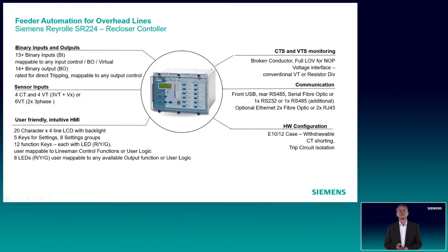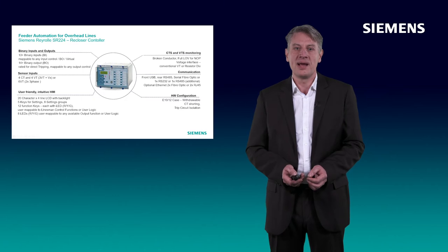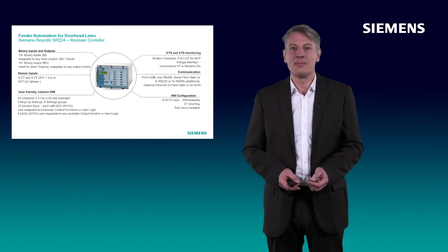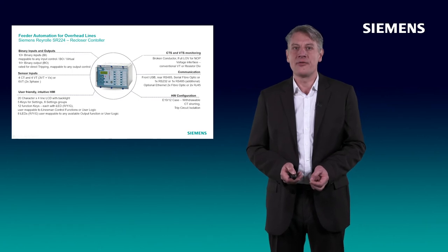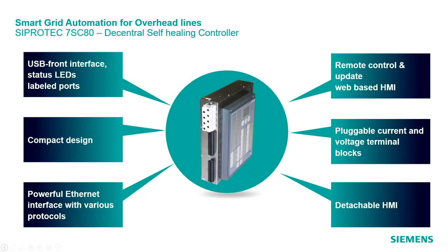Let's move to the second pillar: the feeder automation for overhead lines. The feeder automation system for overhead lines is mainly based on reclosers. Reclosers are circuit breakers which are pole-mounted. Recloser controllers take the action of the protective device. The Siemens SIPROTEC SR224 is a perfect device for this kind of local automation on reclosers. It has the basic functionality needed for these applications, based on recloser cycles, six voltage inputs, and different curves and parameters for overhead line devices.